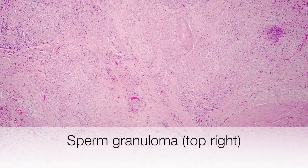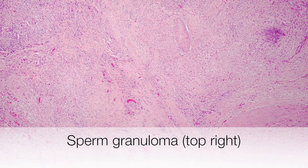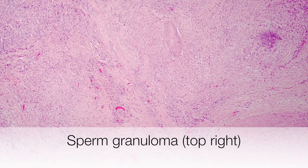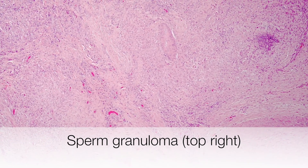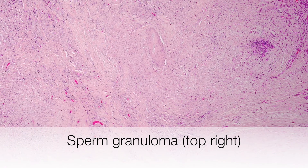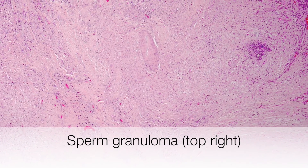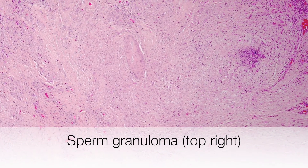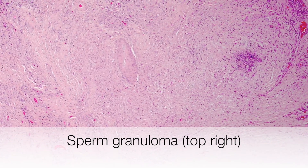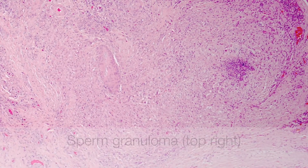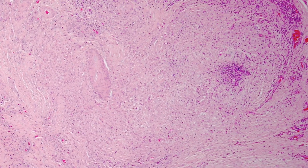Finally, this is another area of the nodule of vasitis nodosa. Here you can see the fibrosis and chronic inflammation, and we are zooming in towards a sperm granuloma at the periphery of the nodule.